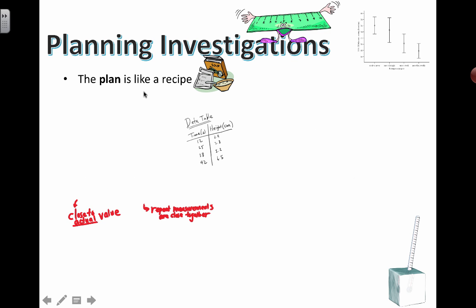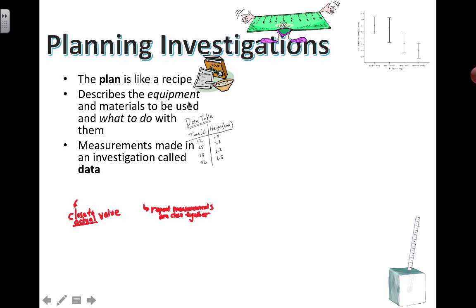In general, a plan is like a recipe, like when you follow a recipe to cook your favorite dish. Inside the plan, we should be able to understand what kind of equipment is going to be used, what types of materials are going to be used, and how we're going to actually use them.